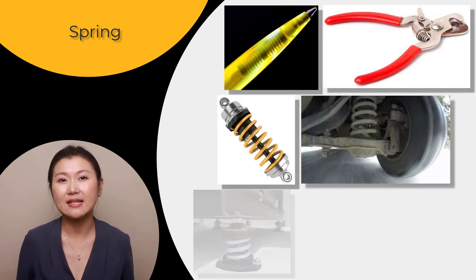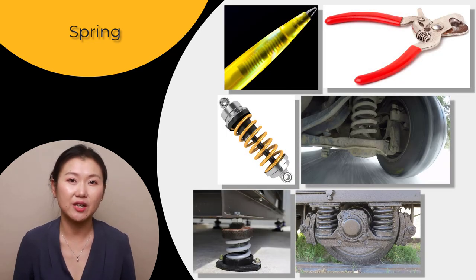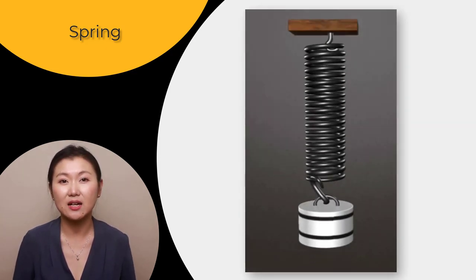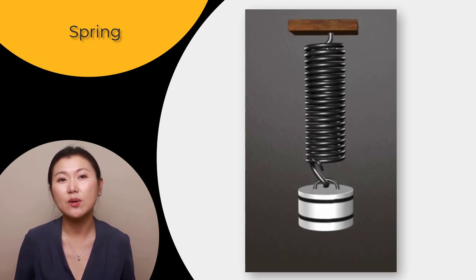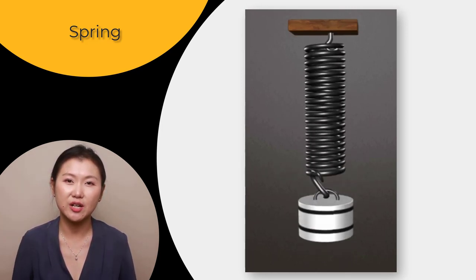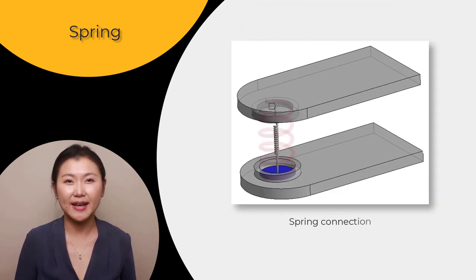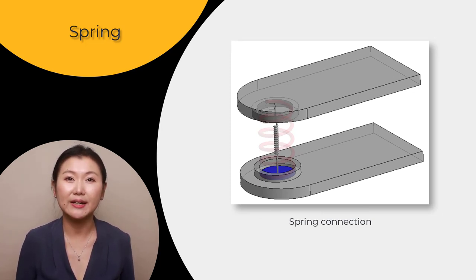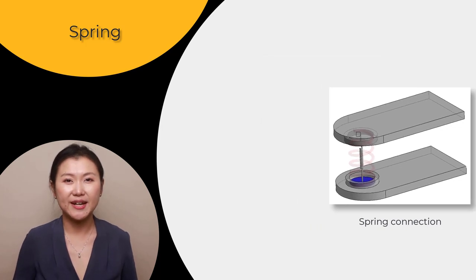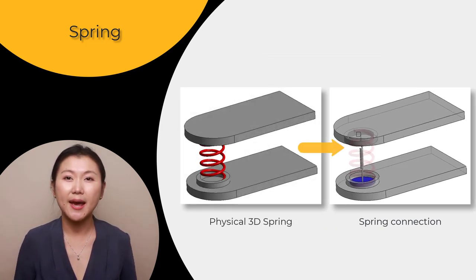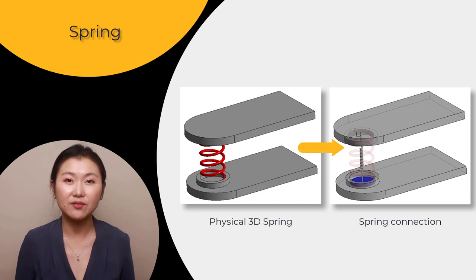Starting with the spring connection — a spring can be defined as an elastic element that stores energy when subjected to a load and regains its original shape when the load is removed. Springs, when used as a connection in ANSYS Mechanical, offer a simplified yet efficient method of modeling a physical spring in a system. Spring connections help reduce the preprocessing time and computational cost involved in simulating a 3D model of a spring in an assembly.